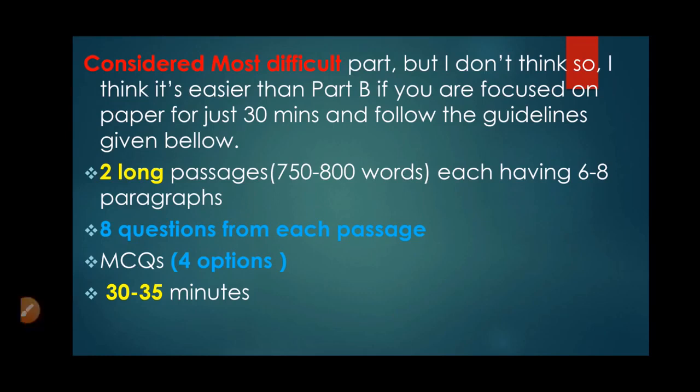Let's discuss about the structure of OET reading part C, which consists of two long passages. Each long passage consists of 750 to 800 words and has six to eight paragraphs. This should be very clear in your mind that every long passage consists of six to eight paragraphs, and you have to answer eight questions from each passage.